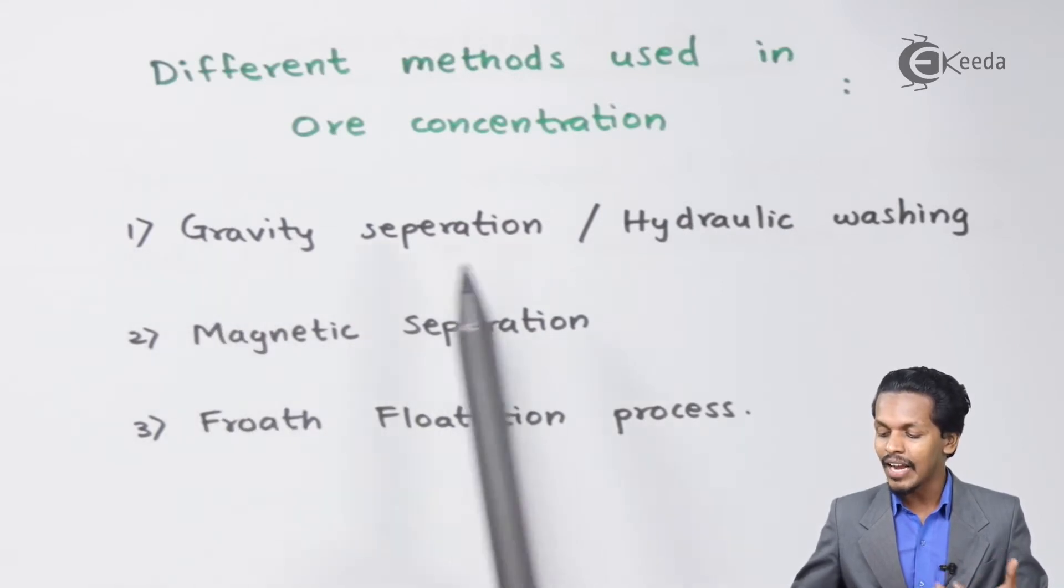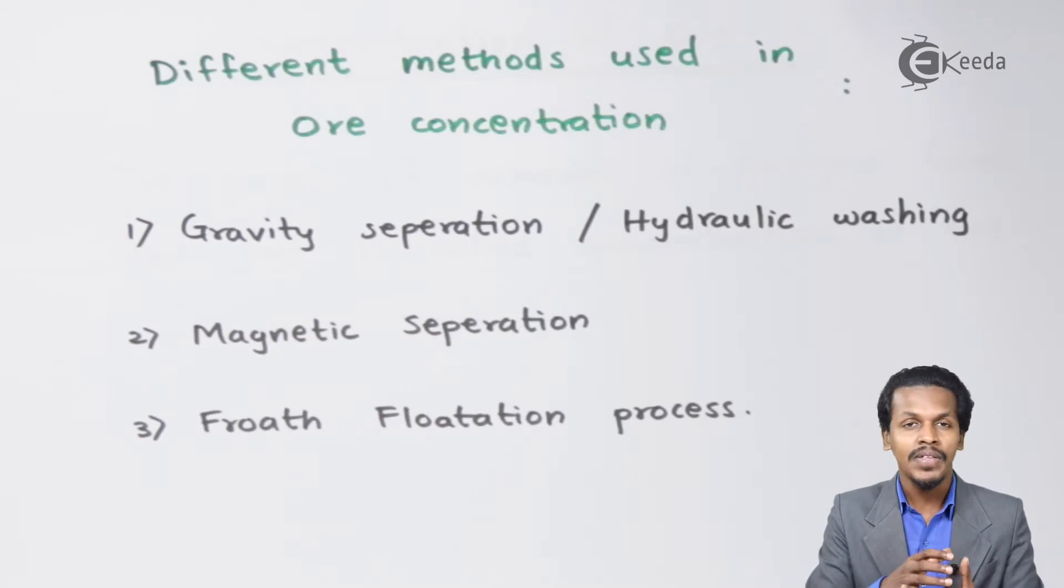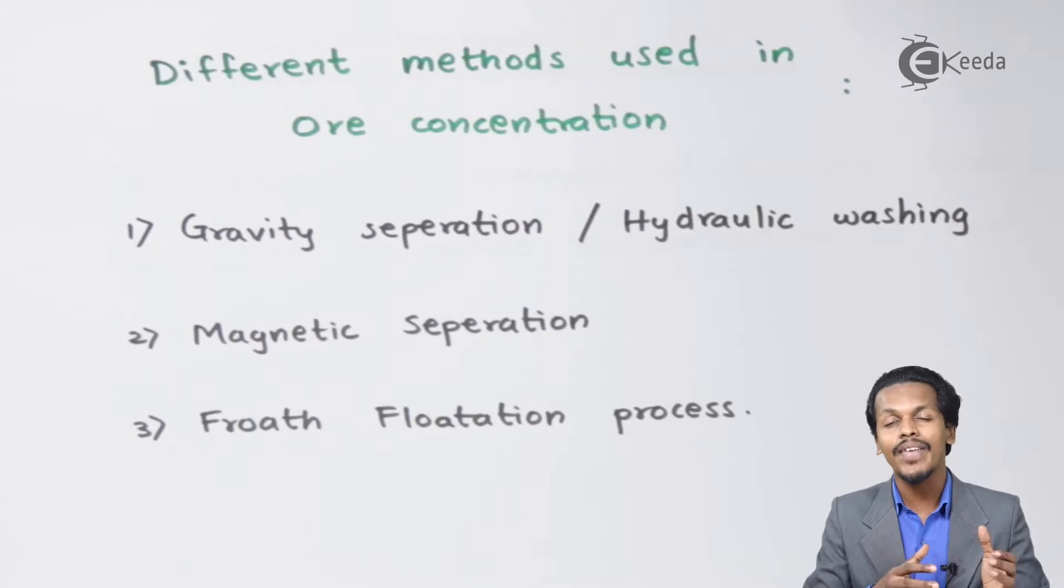Starting with the first one, gravity separation or hydraulic washing. In this case, the ore which consists of impurity, we pass a current of water so that the water will take away all the impurities that are lightweight.